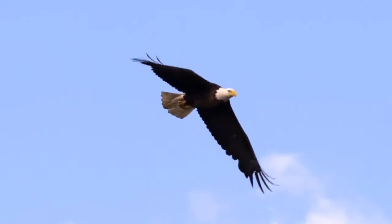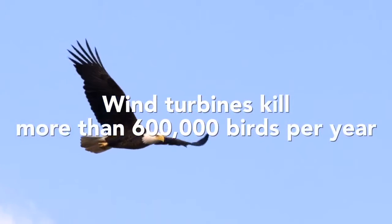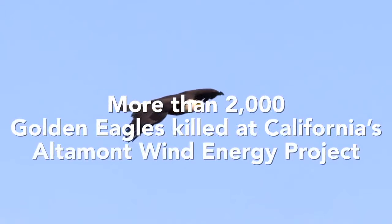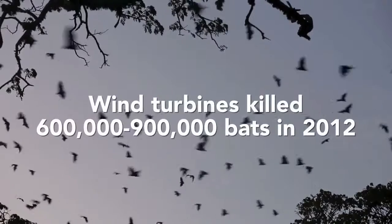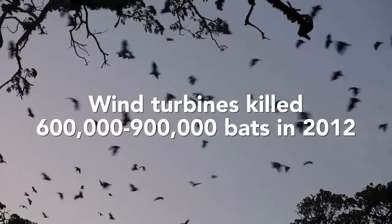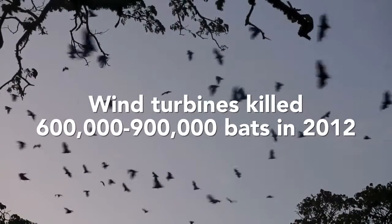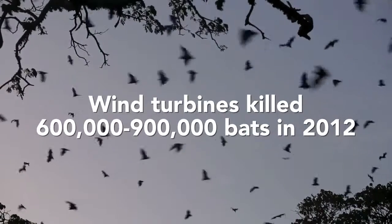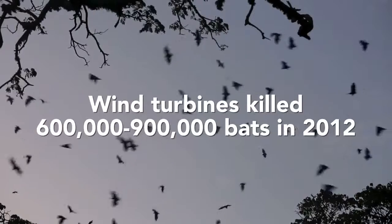Nor are wind turbines bird friendly, killing more than 600,000 birds per year. Raptors such as bald eagles and golden eagles are extremely vulnerable to wind turbines, and more than 2,000 golden eagles have been documented as killed at the Altamont Wind Energy Project in California. Wind turbines are an even greater threat to bats. Spinning turbines create low pressure zones near the tips of the blades; when a bat flies into these areas, its lungs are at higher pressure than the surrounding air, causing them to expand and rupture tiny vessels — effectively causing the bat's lungs to explode. More than 600,000 bats were reported killed from wind turbines during 2012, with some sources placing the death count as high as 900,000.